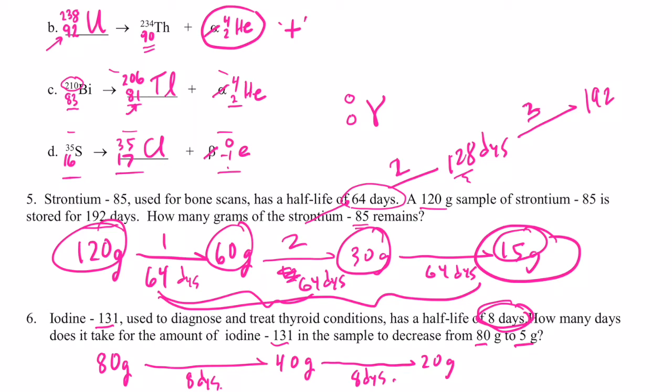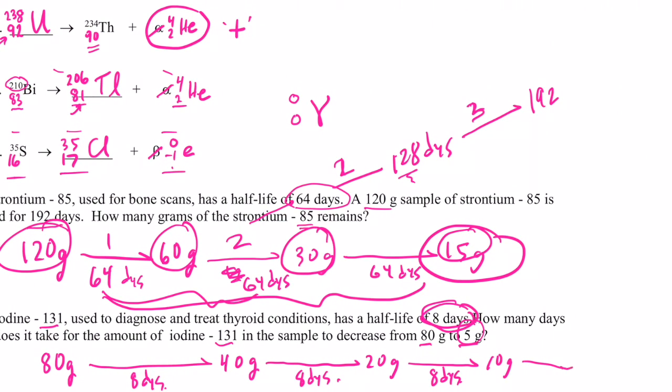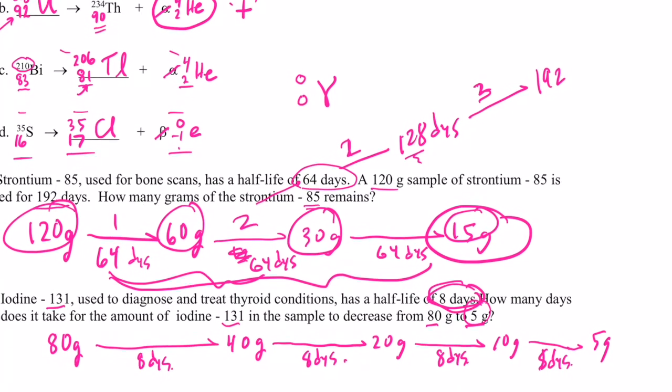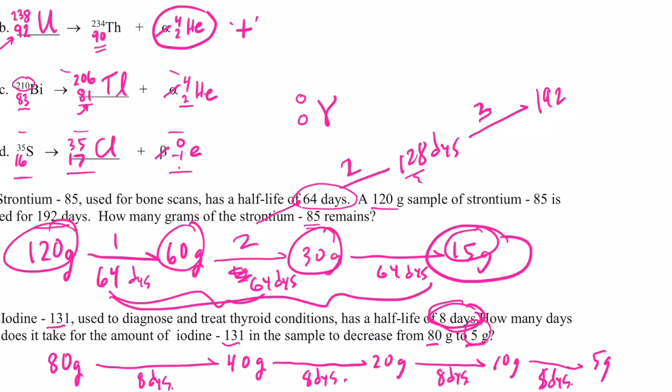20 grams to 10 grams is another half-life. So that takes eight more days. We've almost gotten to five. And 10 grams to five grams would take another eight days. So how many days total did it take to go from 80 to five grams?